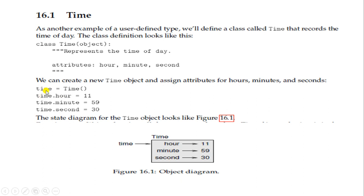Inside the Time object, we are storing the values: time.hour = 11, time.minute = 59, and time.second = 30. You can also see the same thing in a diagrammatical form.